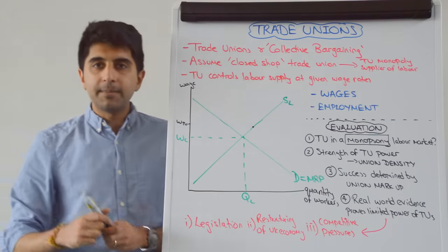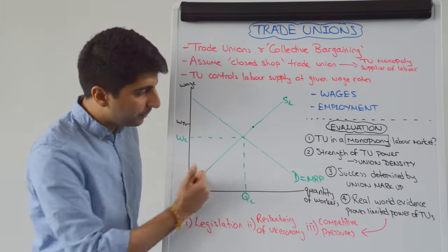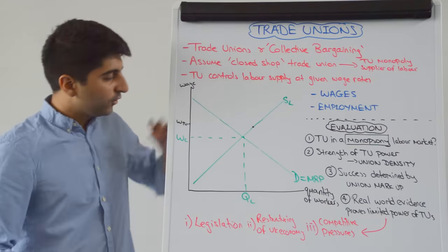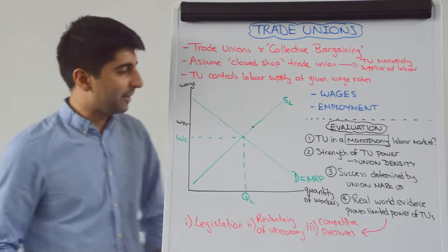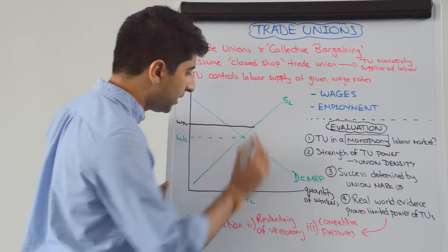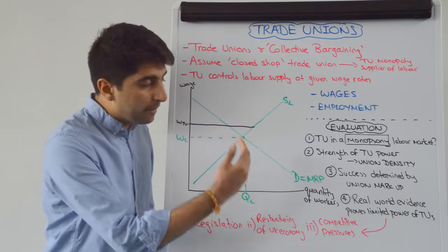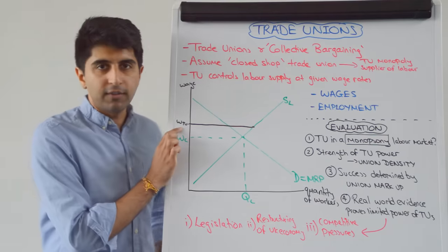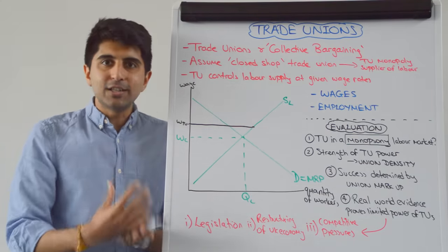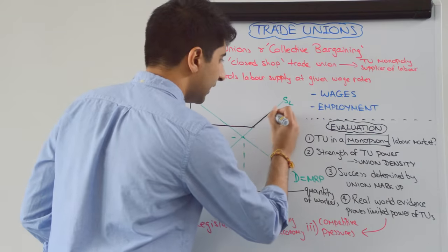The supply curve of labour tells us the quantity of workers willing and able to work at different wage rates. All workers below the black dot on the supply curve would be very happy with wage rate WTU, because they were willing to work for lower wages. So at WTU they are extremely happy and under the control of the trade union. The supply curve now becomes horizontal up until that point. Beyond this point, if the employer wanted more workers, they would need to offer a higher wage rate.